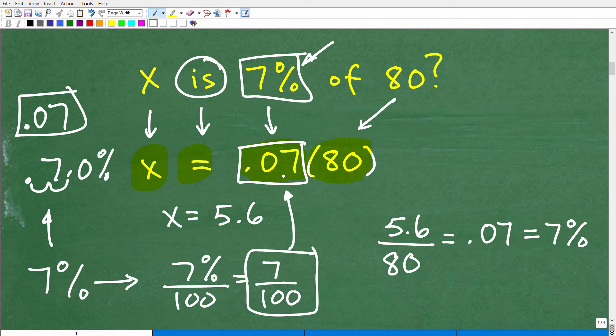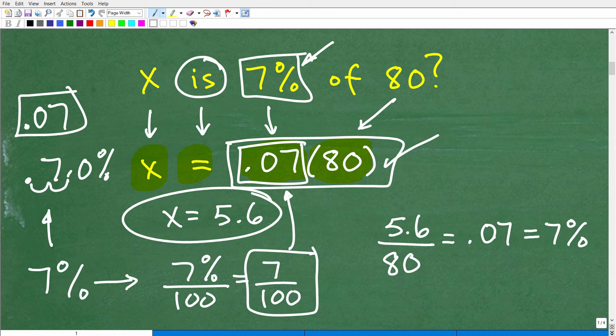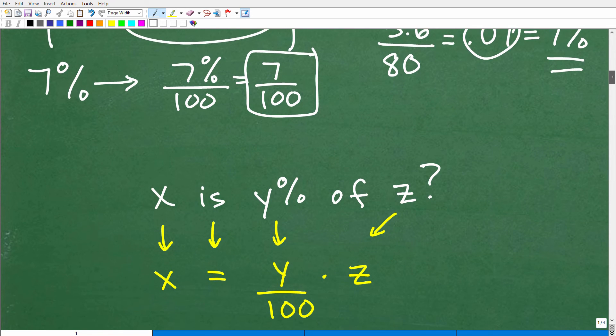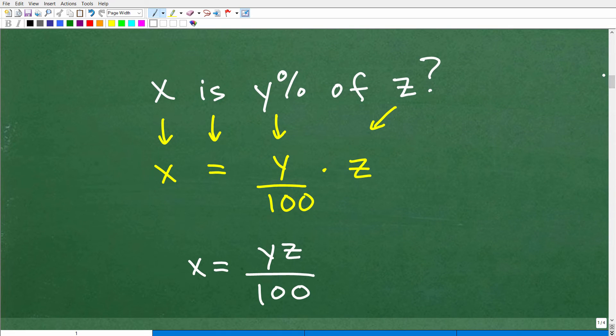So I could choose to write 7 over 100 here or .07. Typically, you're going to write the decimal value because we are using our calculator. And then this right here would be nice and easy to calculate in our calculator or by hand. So .07 times 80 is 5.6. So X is equal to .07 times 80, which is X is equal to 5.6. And we can just check that and we'll say, 5.6 out of 80 is .07 or 7%. So hopefully you understand all these basic percent principles because you're not going to be able to do a problem like this if you don't understand those basic percent principles.